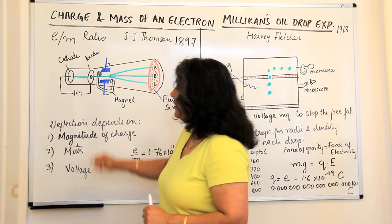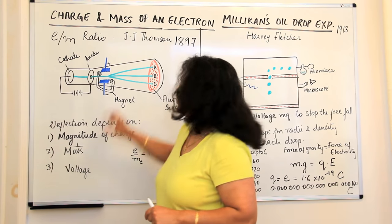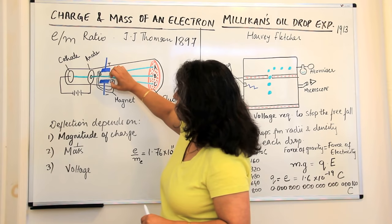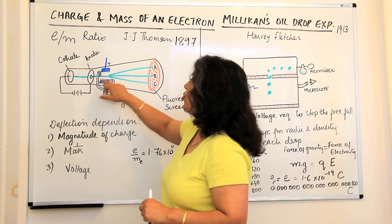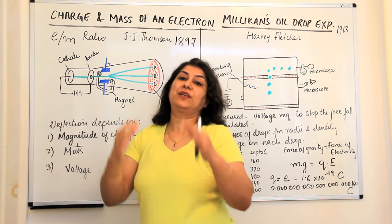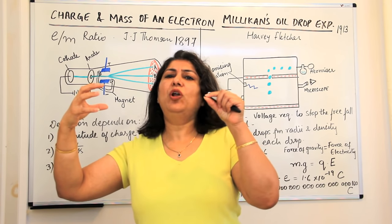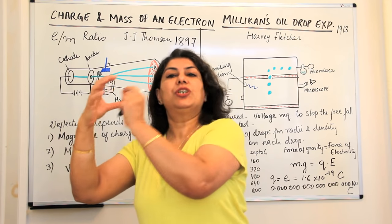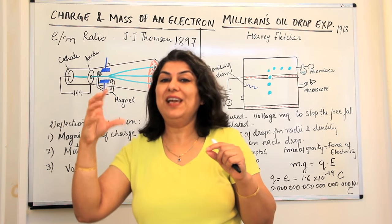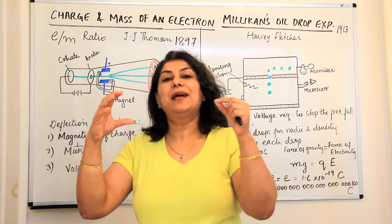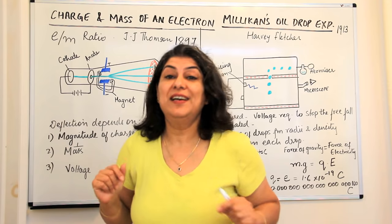The third thing that the deflection of the cathode ray depended on was the voltage. If you increase the voltage of the electric field or the magnetic field, the deflection increases. For example, if you bring a strong magnet to a small piece of nail, the nail would just go and get stuck to the magnet. But with a weak magnet, the nail would move slowly towards it. So these were the factors which decided the deflection of the cathode ray.